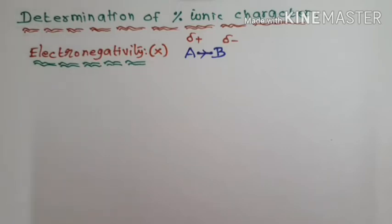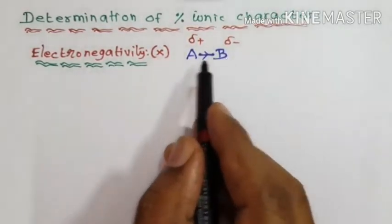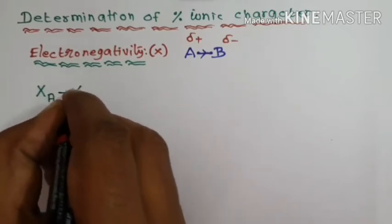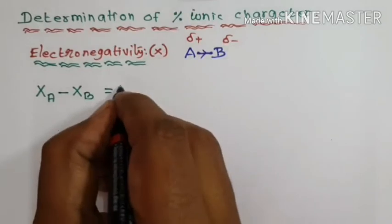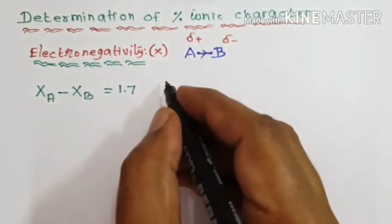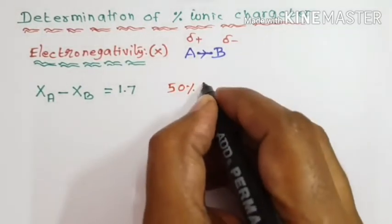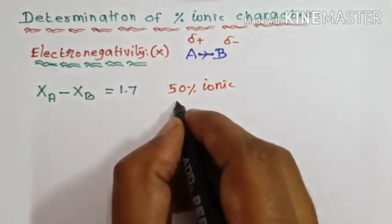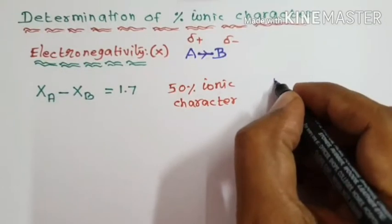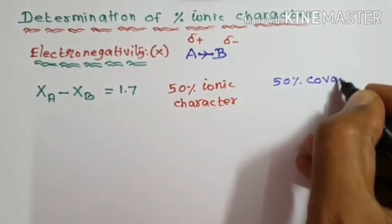Now, the general conditions for the percentage of ionic character. Consider molecule A–B. If the electronegativity difference XA minus XB is exactly 1.7, then that molecule has 50% ionic character and 50% covalent character.